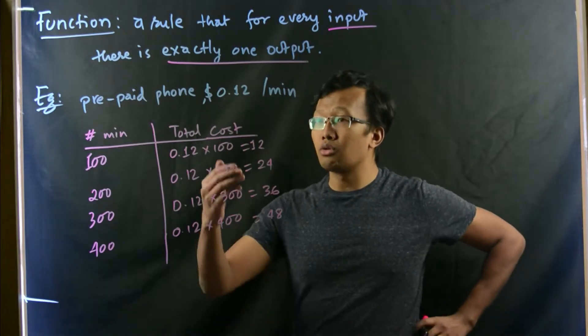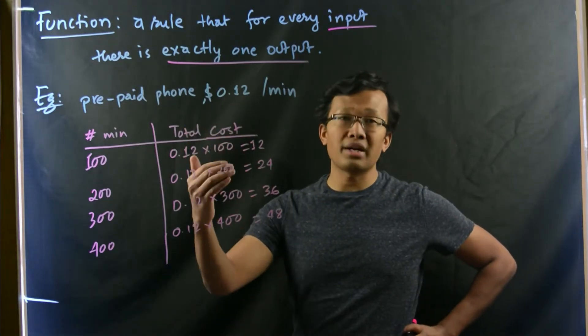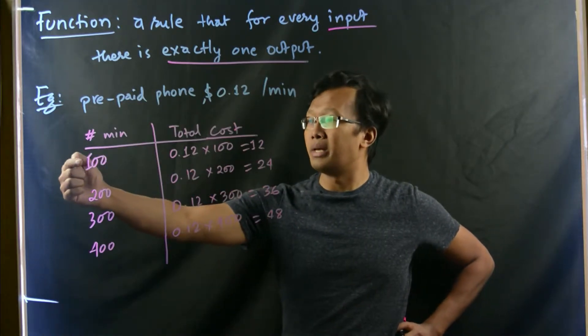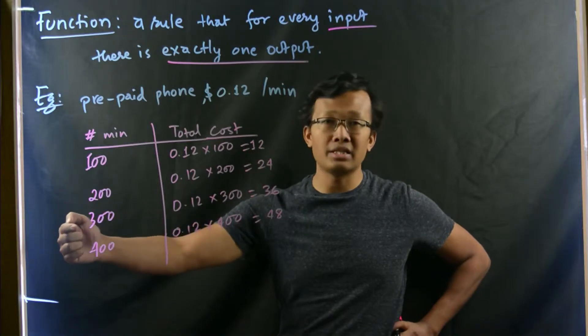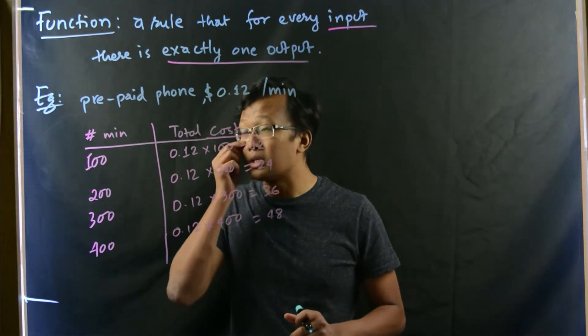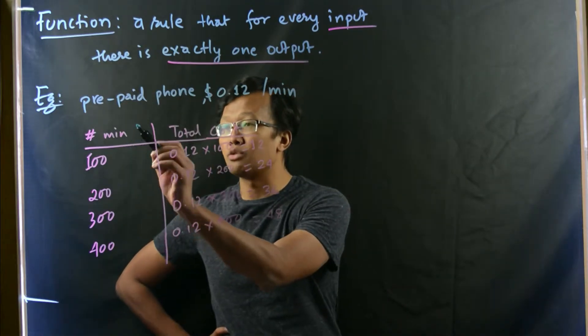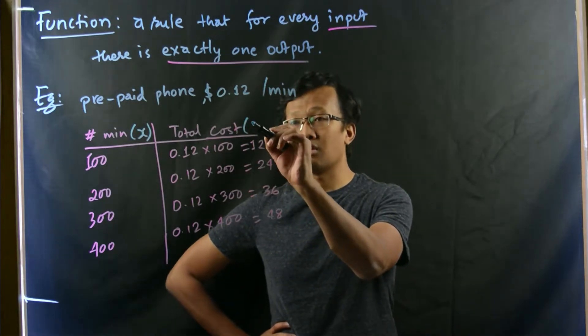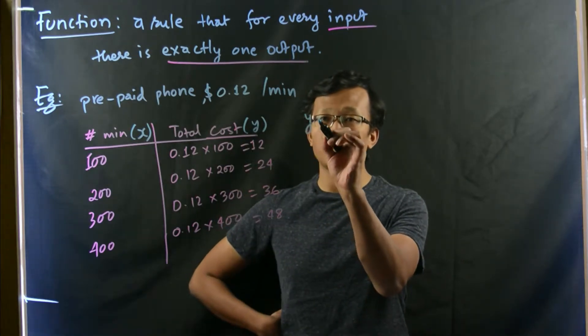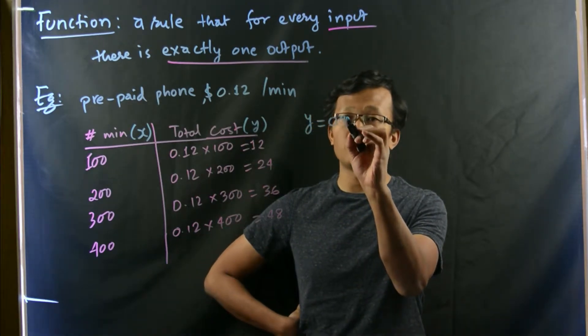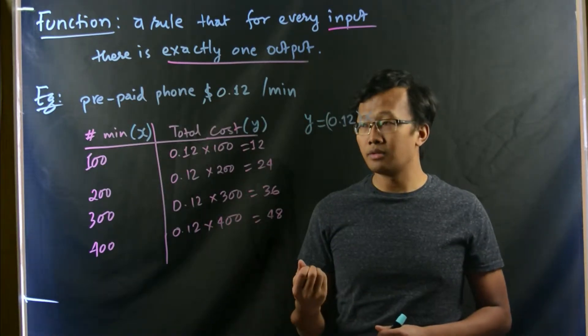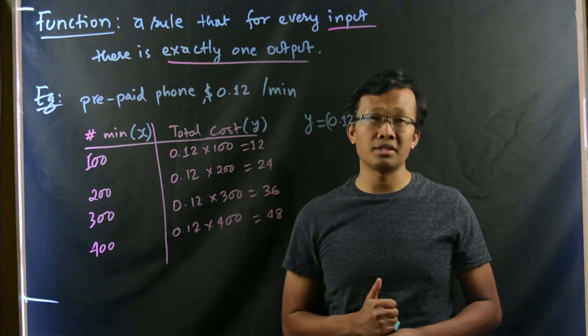Now, here you can clearly see that the total cost or the total price that you must pay for the phone call or the phone service is directly dependent upon the number of minutes that you use for the phone per month. This can be written as, if you consider this number of minutes to be x, and the cost would be defined as y. Then, this entire setup can be represented as this model, y equals to 0.12 times x. This would be the model which models the monthly cost of the prepaid phone service that you have.